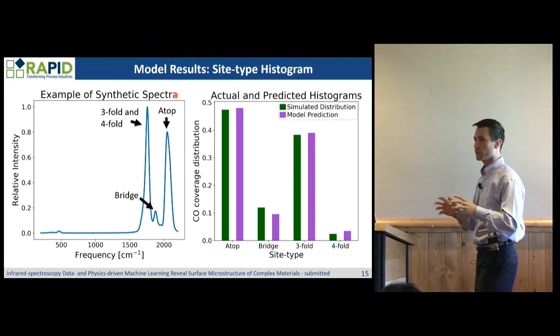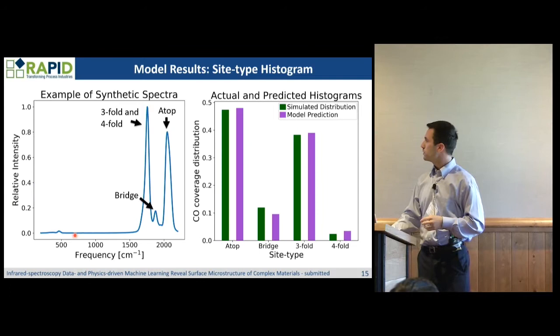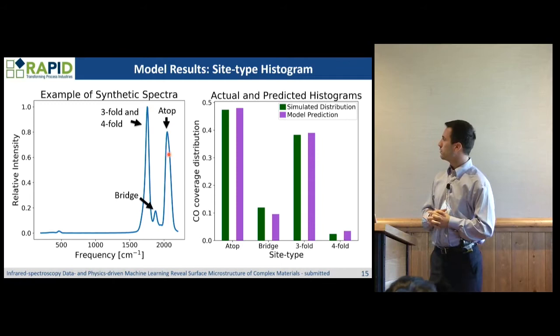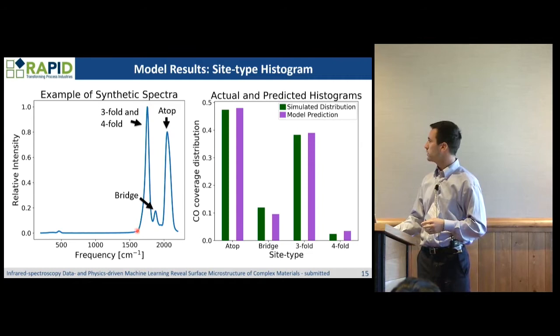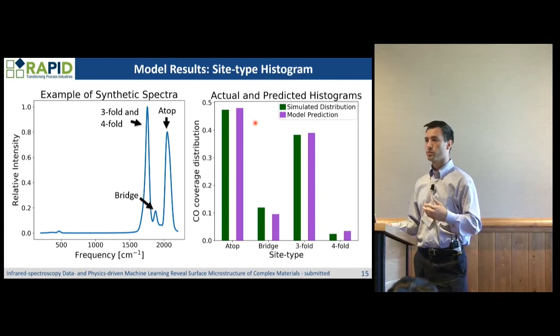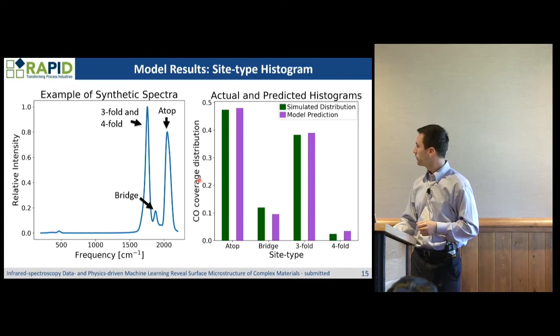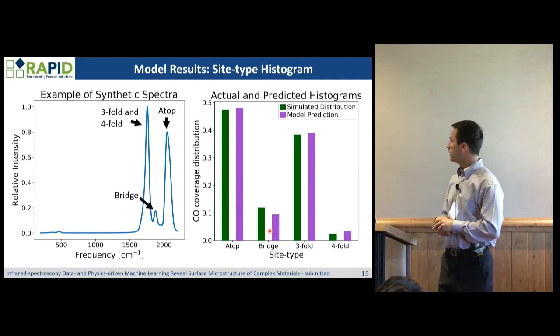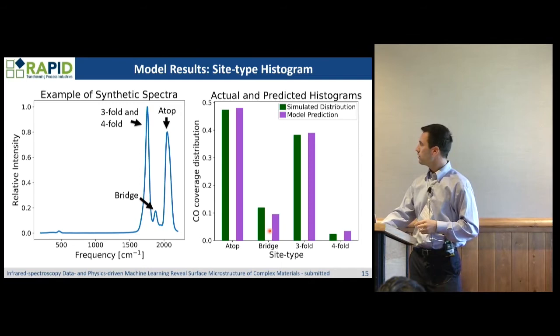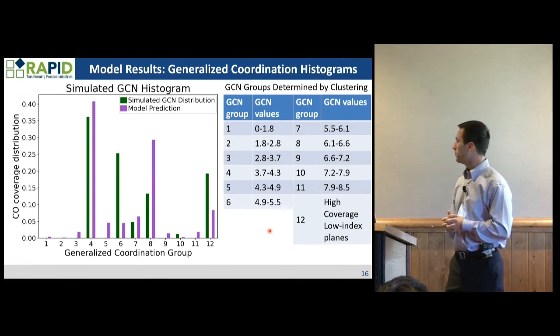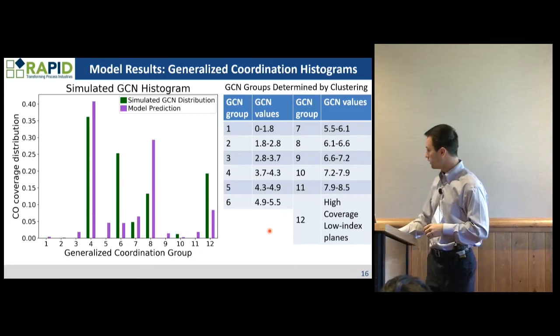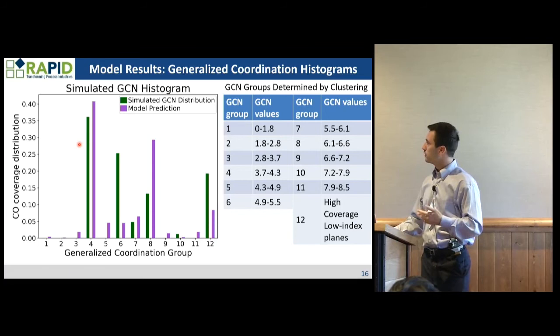Here we have relative intensity versus frequency of some synthetic spectra, where intensity corresponds to contributions from CO absorbed at ATOP sites, three-fold and four-fold sites, and bridge sites. We compare the actual absorption site distribution of that simulated spectra against our model prediction in purple. You can see very good agreement between the complex synthetic spectra and what we predict. We do something similar for GCN, which takes into account the coordination of each site — a more detailed measure of the absorption site type. Again in green is the actual GCN distribution and in purple is the model prediction, and again you get very good agreement.